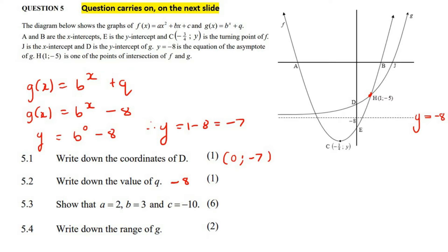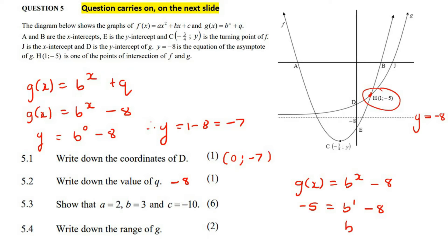We can take the equation g of x equals b to the power of x minus 8, because we found q is minus 8. Then we substitute the point of intersection: y equals minus 5 and x equals 1. If we work out b, we end up getting b equals 3. So now we have b as 3 on the parabola as well — the b's are the same!